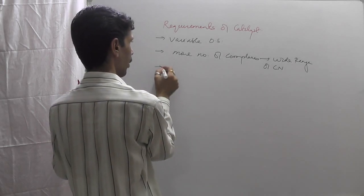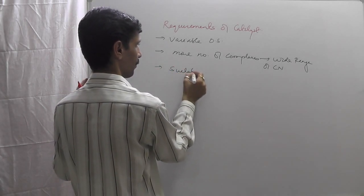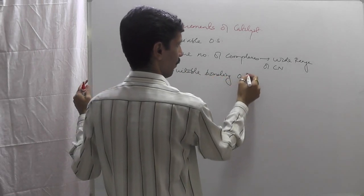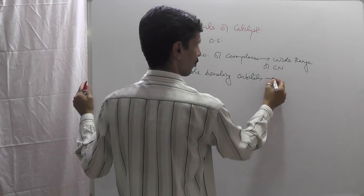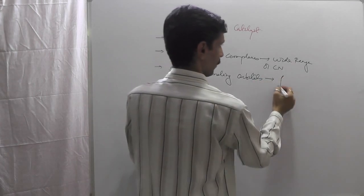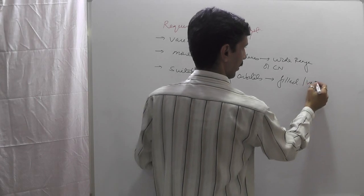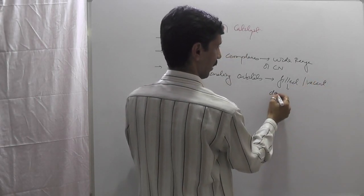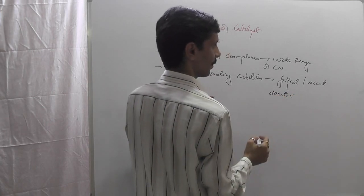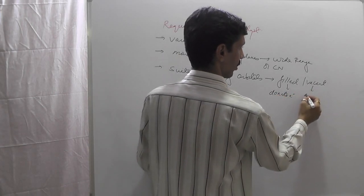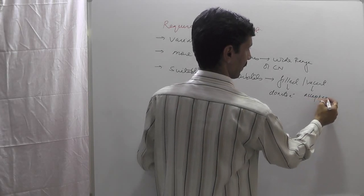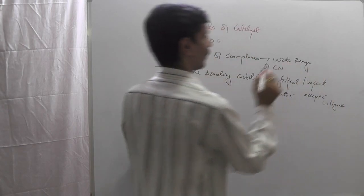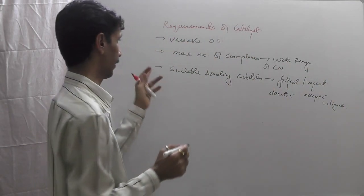The next requirement is it should have suitable bonding orbitals. There can be a filled orbital or a vacant orbital. If there is a filled orbital, it has the ability to donate electrons. If there is a vacant orbital, it has the tendency to accept electrons from the ligands. So the catalyst can either donate or accept electrons — that is another important requirement.